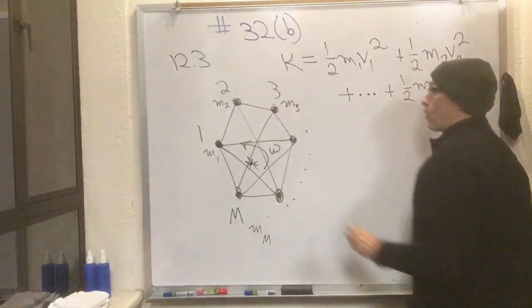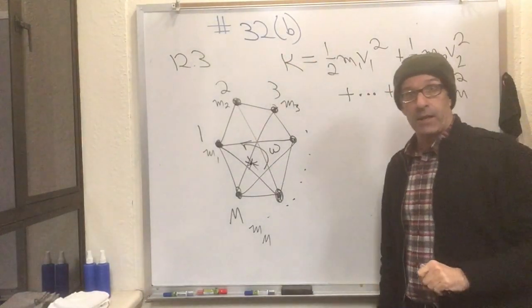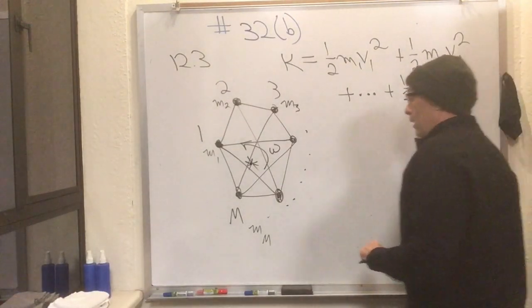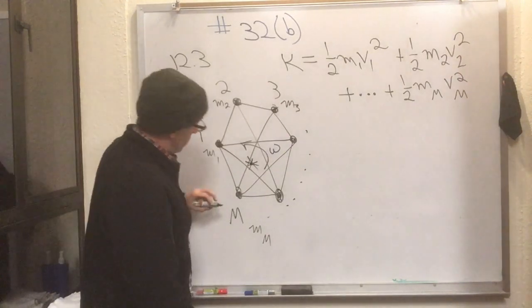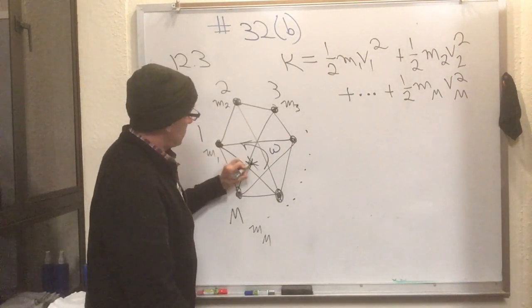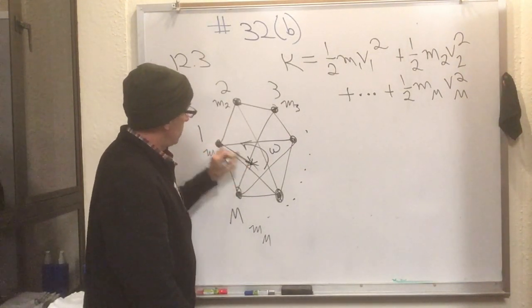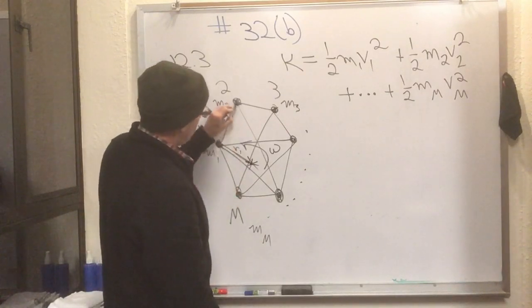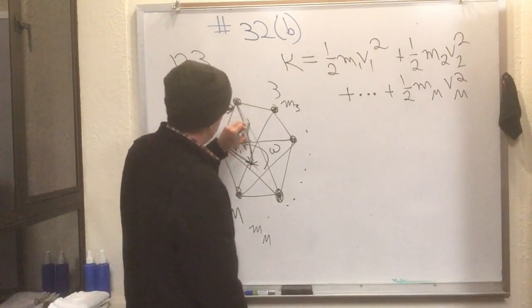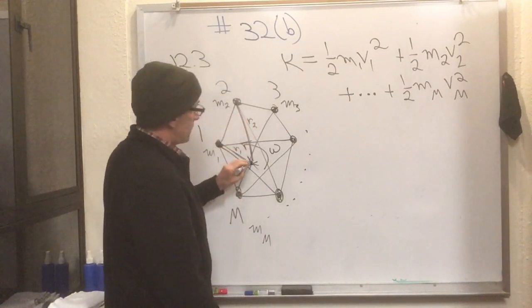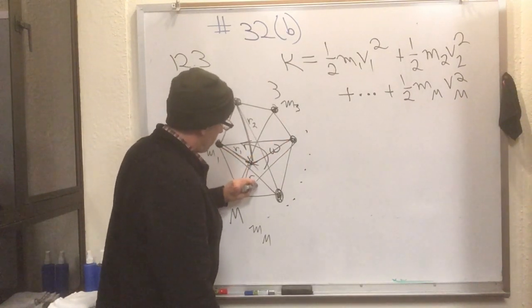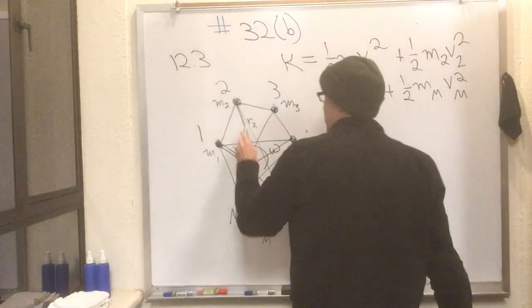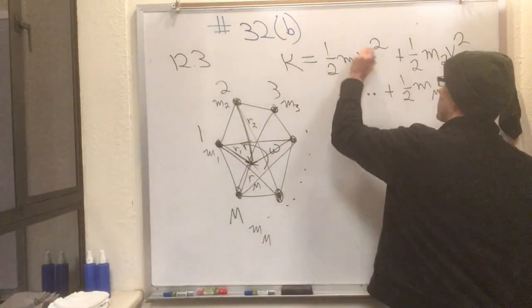And this thing that we're calculating here is the total kinetic energy of the whirling plate. Well, now we got another thing we can do. Let's suppose that the distance from here to here is r1, and let's suppose the distance from there to there is r2, etc., r3 dot dot dot r sub m.